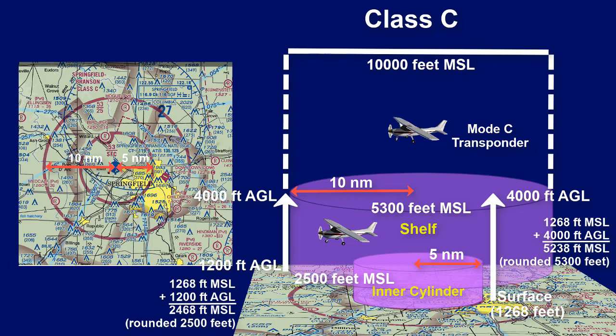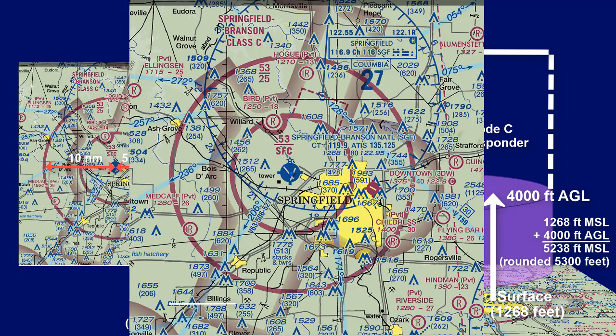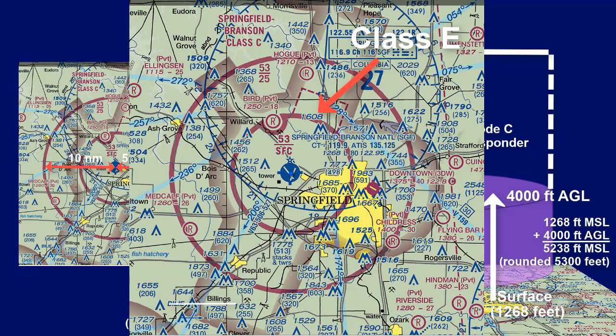That equals 2,468 feet, rounded up to 2,500 feet, and of course finishes at 5,300 feet, so you see the 53 on the top. Notice there's also Class C down to 700 feet above ground level, and a little section of Class C under the shelf that extends from the surface to the shelf at 2,500 feet MSL.